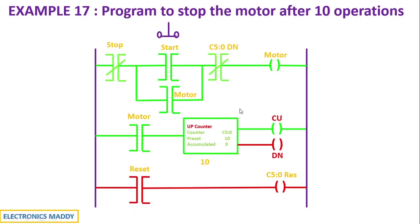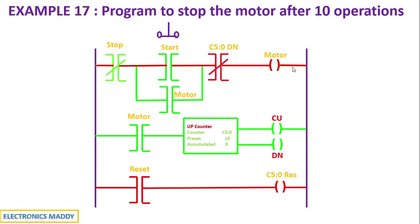It is starting from zero and going up to 10 in incrementing fashion. Once a count of 10 is reached, the accumulated value is equal to 10 and the preset value is also equal to 10. When these two are equal, the done bit goes to high state. If you carefully observe, a normally closed contact is used here, so when the done bit goes high, this contact goes low. As a result, it acts as an open circuit and does not allow current to flow through this path, hence the supply is cut off to the motor. The entire rung gets de-energized, the motor gets de-energized, and the motor stops after 10 operations.